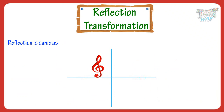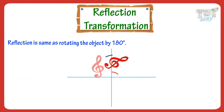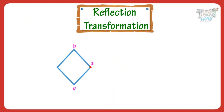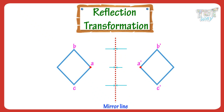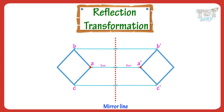Reflection is also the same as rotating the object 180 degrees. Points on an image and its reflection are equidistant from the line of reflection or mirror line. When a point is reflected in a mirror line, the point and the image of the point are equidistant — or the same distance — from the mirror line.